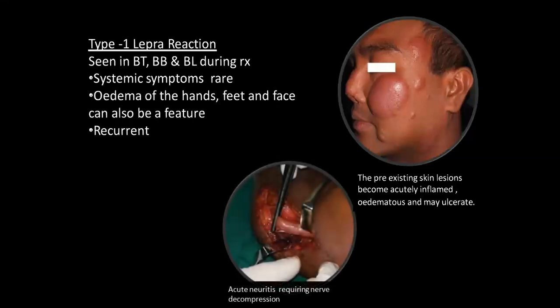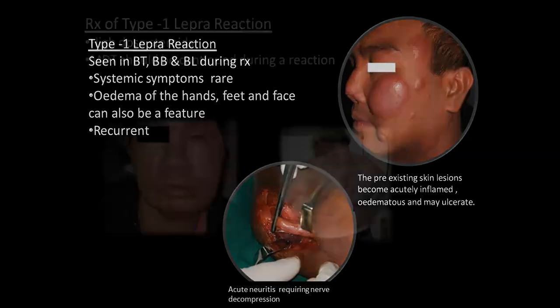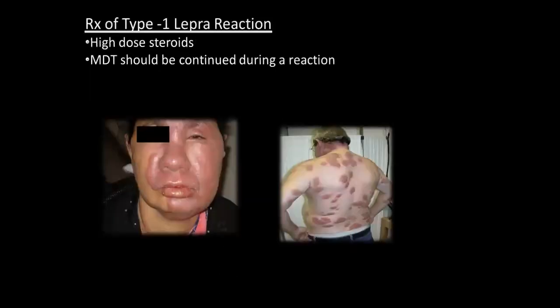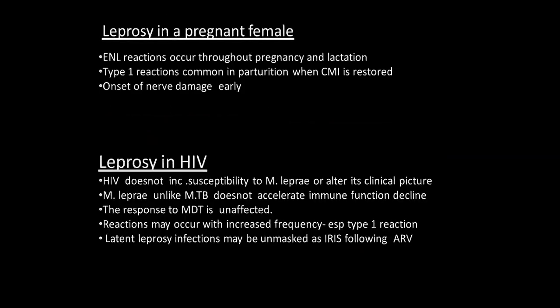This is acute neuritis requiring nerve decompression. Lepra type 1 reaction: high-dose steroids are enough — we do not need to give clofazimine or thalidomide. Multi-drug therapy should be continued during the reaction.